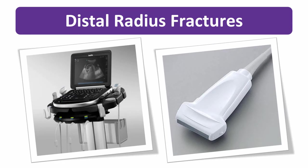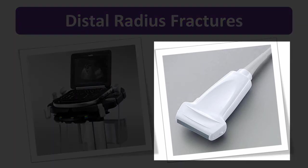In this screencast, we hope to show you that point-of-care ultrasound is quick, easy, and can help take that frustration away. Because the bony structures of the wrist are very superficial, we'll be using the high-frequency linear array transducer — the same probe used in vascular and soft tissue assessments.